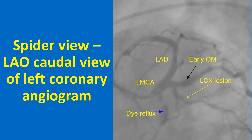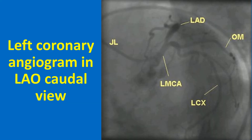Absence of dye reflux would indicate left main ostial disease or rarely spasm. This is a left coronary angiogram in LAO caudal view in another case, with the JL Judkins left coronary catheter visible. Differences in coronary orientation can be due to anatomical variations or mild changes in angulation used. X-ray penetration is less in LAO caudal view, especially in obese individuals. In this view, the mid segment of LAD is foreshortened and this view should not be used during angioplasty of the mid LAD.